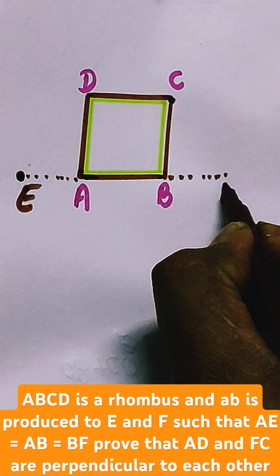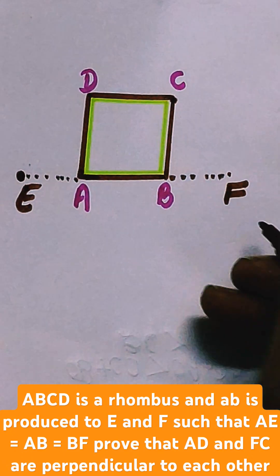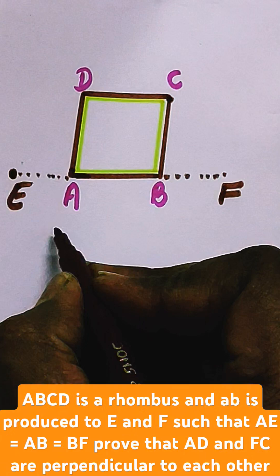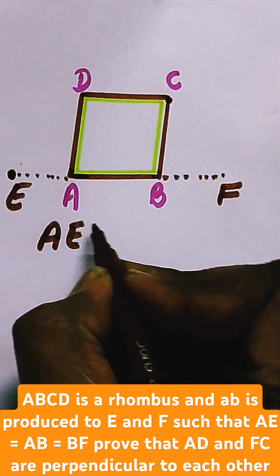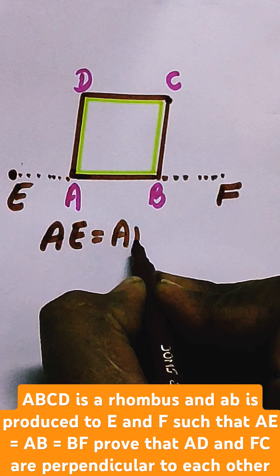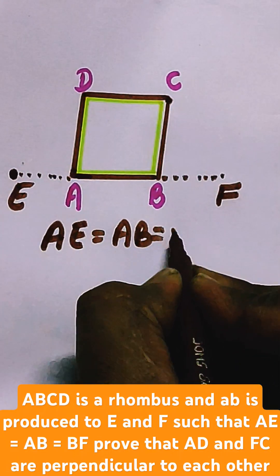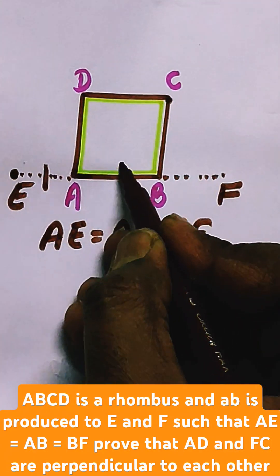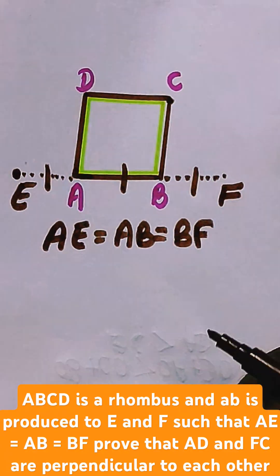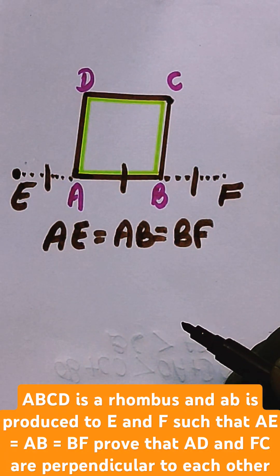The extension is such that AE is equal to AB is equal to BF. That means all these three sections are equal to each other. Now we need to prove that ED is perpendicular to FC.